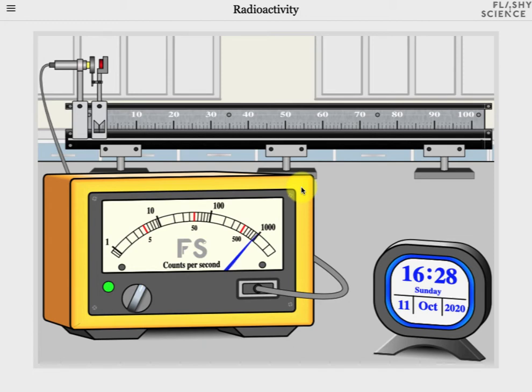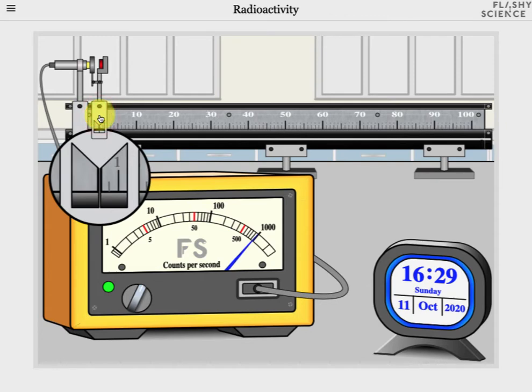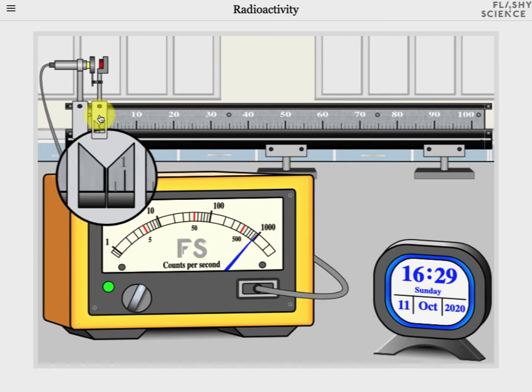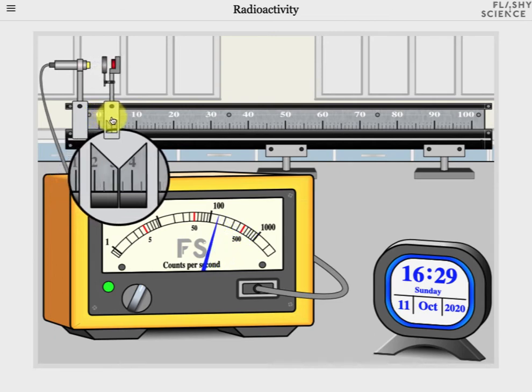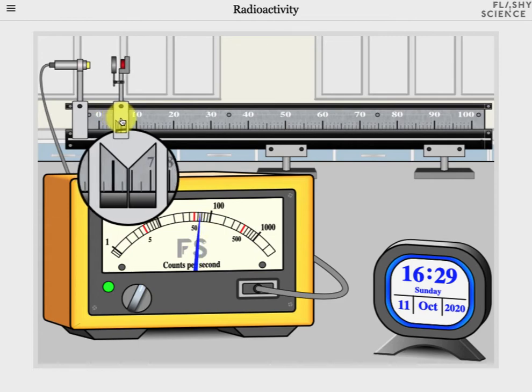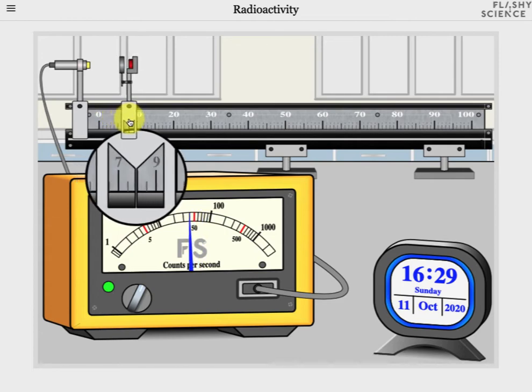I can increase the separation between the source and the detector by first clicking on this region of the sample mount. With the mouse button held down you will see a zoomed view of the ruler. Now if I drag the mount sideways you'll see that the signal also changes, decreasing as the separation between the radioactive source and the Geiger-Müller tube increases.